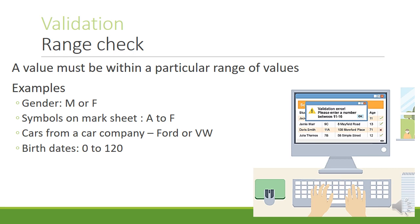A range check is when a value must be within a particular range of values. For example, the gender can be M or F; symbols on a mark sheet; cars from a car company — Ford or VW; birthdates 0 to 120. Anything outside those ranges will be rejected.